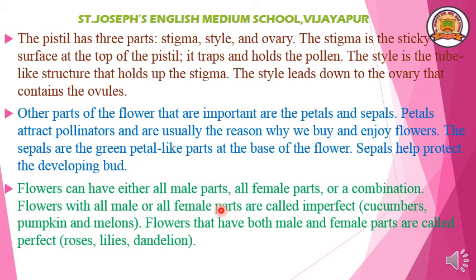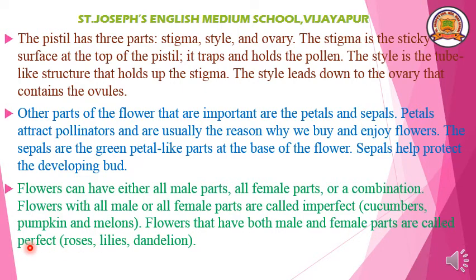Flowers can have either all male parts or all female parts, or a combination. Flowers with only male or only female parts are called imperfect flowers. There are two types of flowers: imperfect and perfect. Imperfect flowers have either male or female parts only — examples are cucumber, pumpkin, and melons. Whereas some flowers have both male and female parts; they are called perfect flowers. Examples are rose, lilies, dandelion, and hibiscus. All these are examples of perfect flowers.